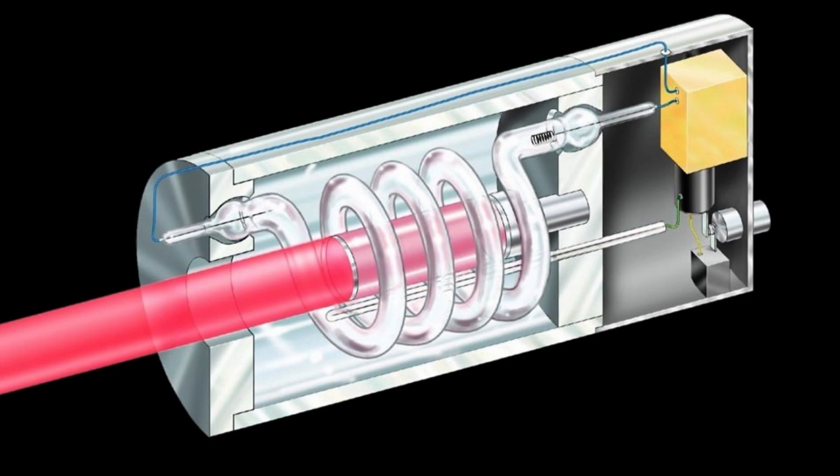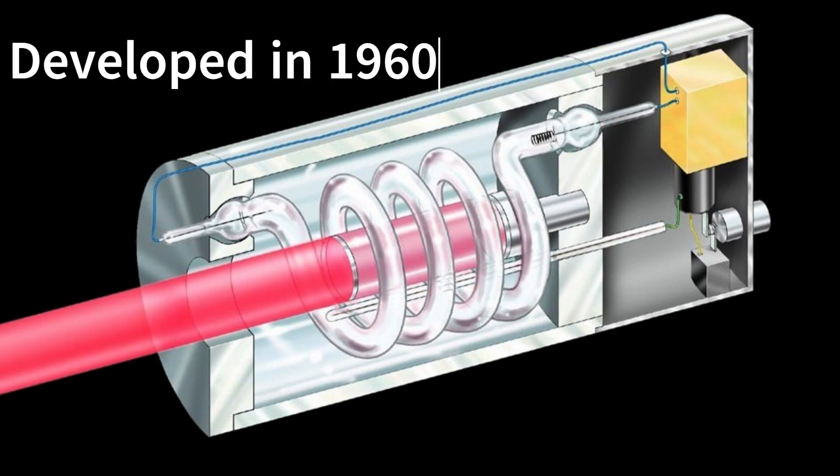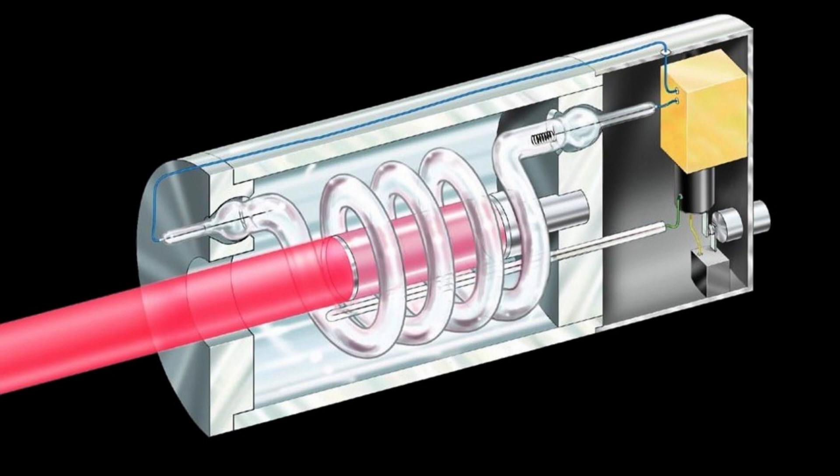A ruby laser is a solid-state laser that uses the synthetic ruby crystal as its laser medium. Ruby laser is the first successful laser developed by Maiman in 1960. Ruby laser is one of the few solid-state lasers that produce visible light. It emits deep red light of wavelength 694.3 nanometers.